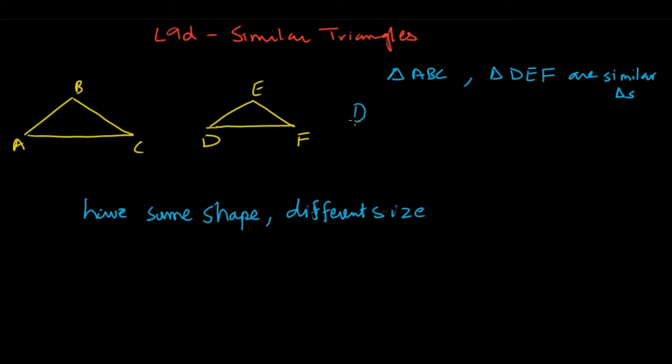First is that all the angles are equal. So all the corresponding angles - angle A which is here corresponds to angle D (the first letters), so angle A and angle D would be equal. Similarly, angle B and angle E would be equal, and angle C and angle F would be equal.